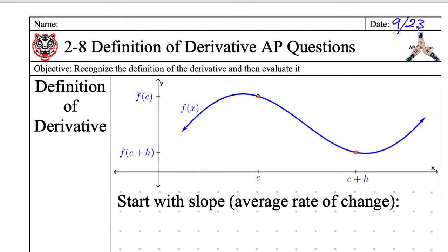Alright, so, someone read our objective. Yeah, so recognizing it is kind of the hard part. Normally, what happens on the, like, on my test, on the actual AP test, you're like, what is this weird limit fraction thing? And if you ever have that question, you should automatically think, ah, definition of the derivative.